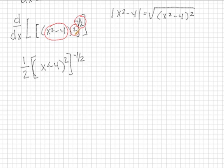And going to the middle function, we will get 2 times x squared minus 4. And that would just be to the 1. And then taking the derivative of the interior function, we just end up with 2x.